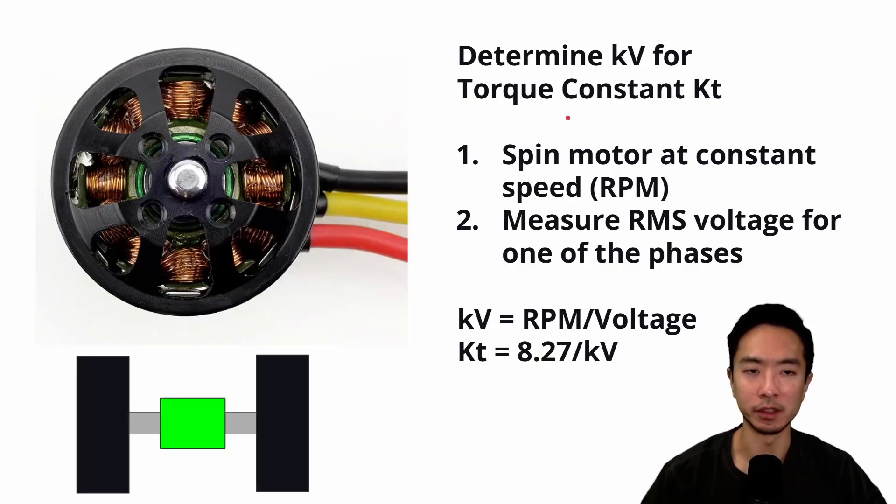Now to find the KV, this is what you can do. Normally when you find the KV, the main goal is to find the torque constant. So what you could do is spin the motor at constant speed. You could do this by connecting a known motor to your unknown motor with some shaft coupling and set it to some known RPM. Once you do that, you can measure the RMS voltage for one of the phases for your unknown motor. Then you're going to have KV equals RPM divided by that voltage. And then your torque constant KT will be 8.27 divided by KV.